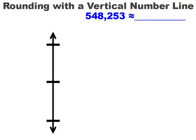Now let's try one with a much larger number. We have 548,253. We're going to round that to the nearest 10,000. So when we're looking at this number, we're going to have to find out which digit is in the ten thousands place.